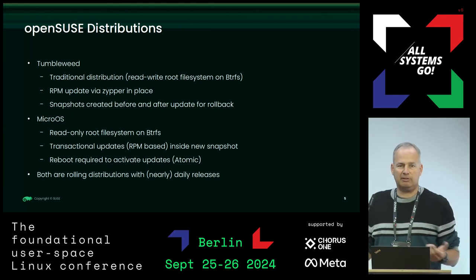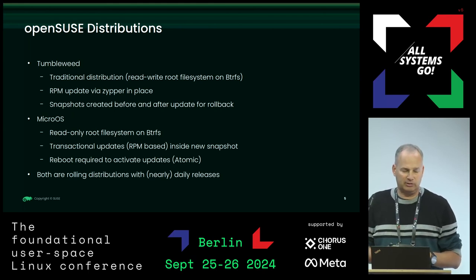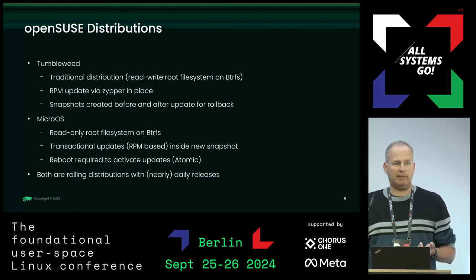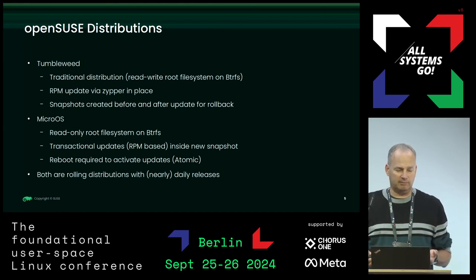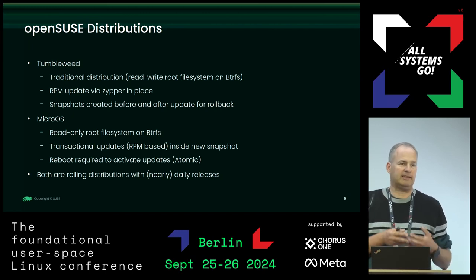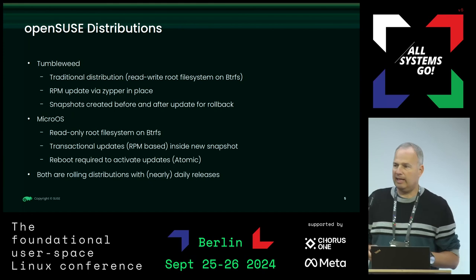For OpenSUSE, we have several flavors of distributions that fall into two categories. We have OpenSUSE Tumbleweed, which is a traditional distribution with a read-write root file system. We use RPM as the package format and have Zypper as a tool to manage RPM repositories and apply updates. We use ButterFS as the root file system, and with Snapper we create before-and-after snapshots of an update, so we can compare snapshots to find what was modified and do a rollback if something goes wrong.